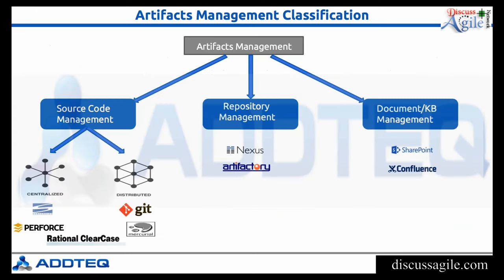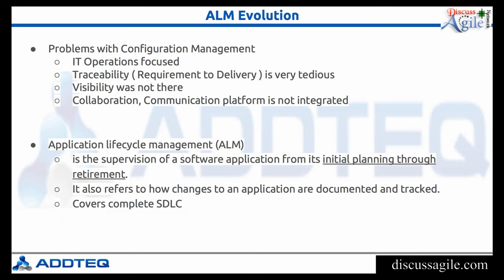The main artifact management classification is source code management, repository management, and documentation management. There is a problem with configuration management: it evolved in the early 80s or 90s, and it was more IT-operations focused. Traceability right from requirements to delivery was very tedious, visibility required special individual effort, and the collaboration and communication platform was not integrated at all.